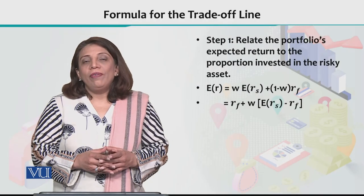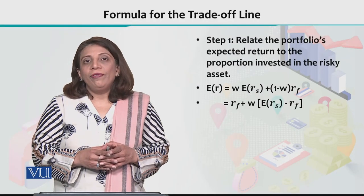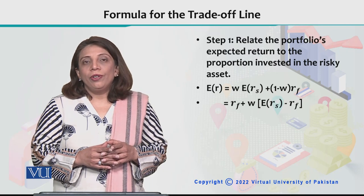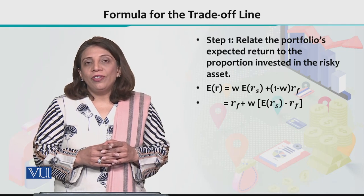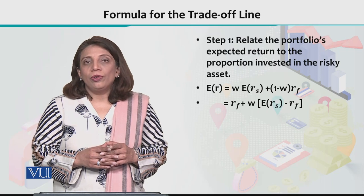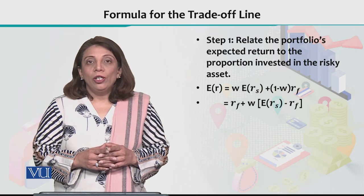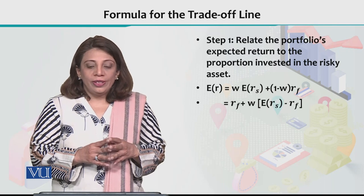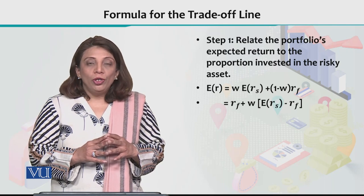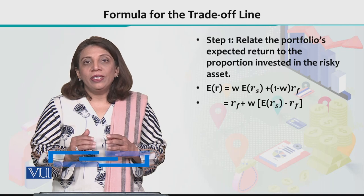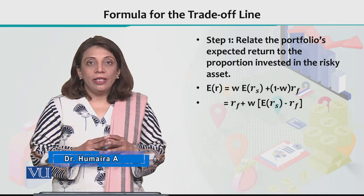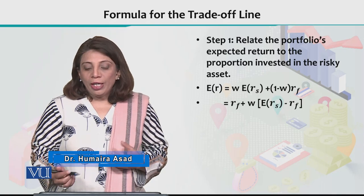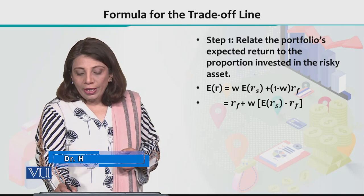In this section, I will derive the formula that is used to draw the expected rate of return and risk trade-off line, which is also known as the capital allocation line. The first thing we need to do is relate the portfolio's expected return to the proportion invested in the risky asset, and that proportion will be given by W.